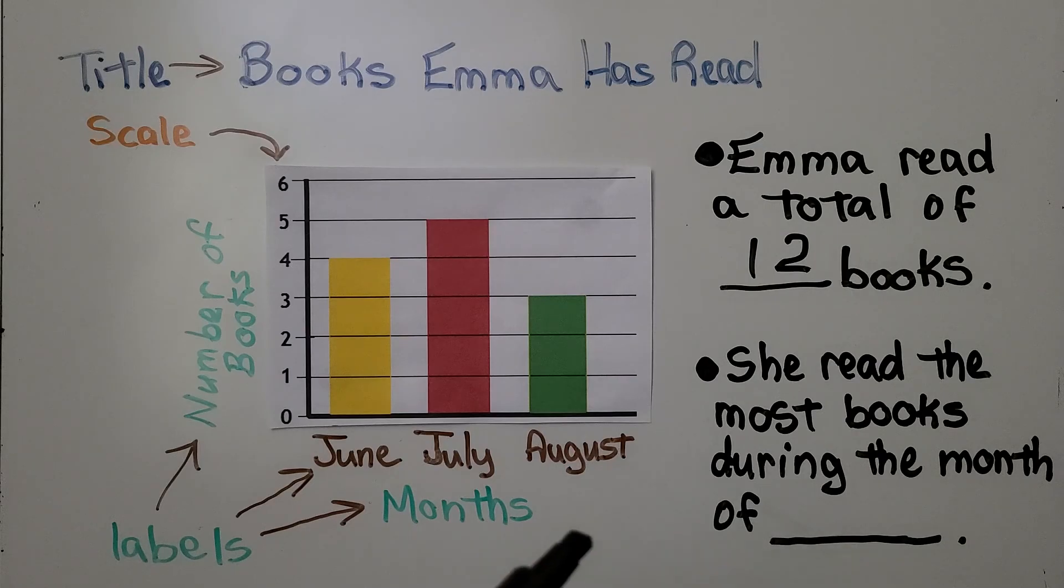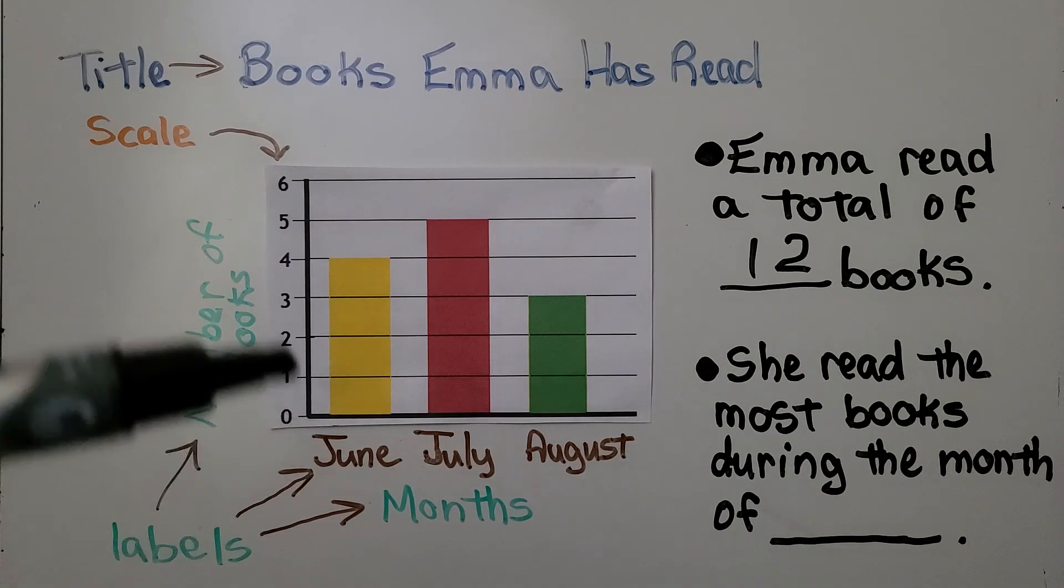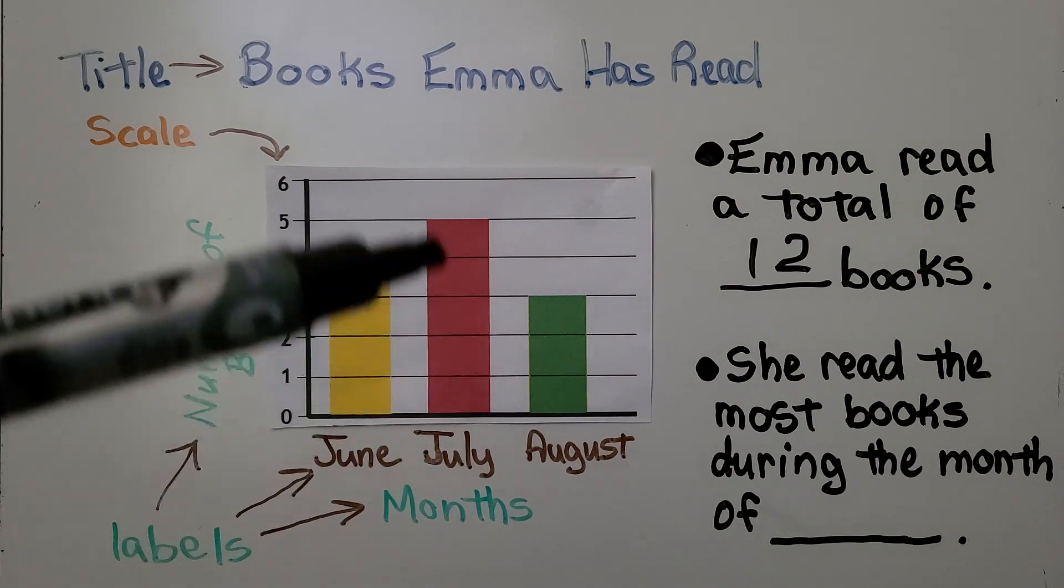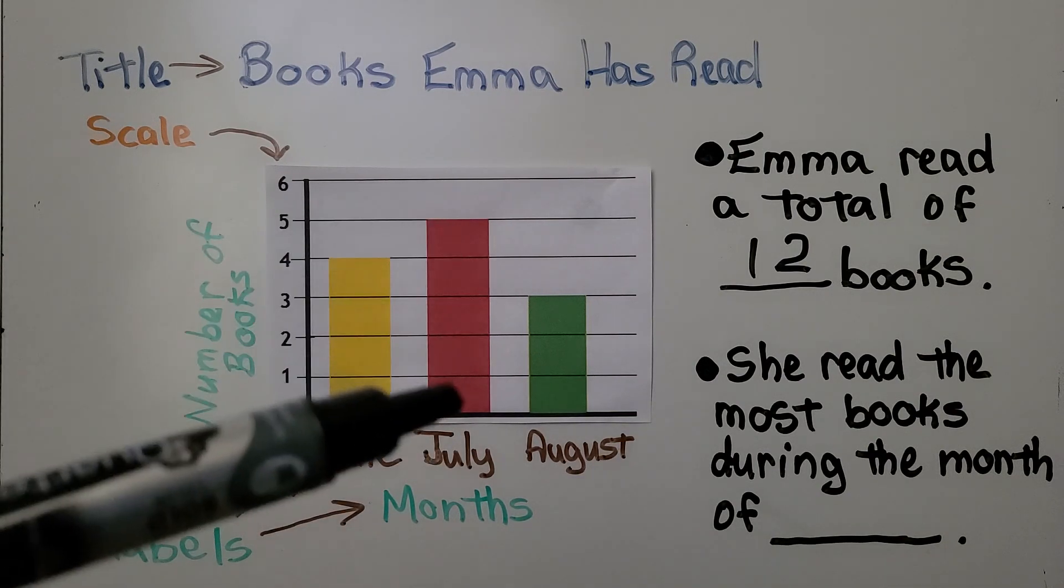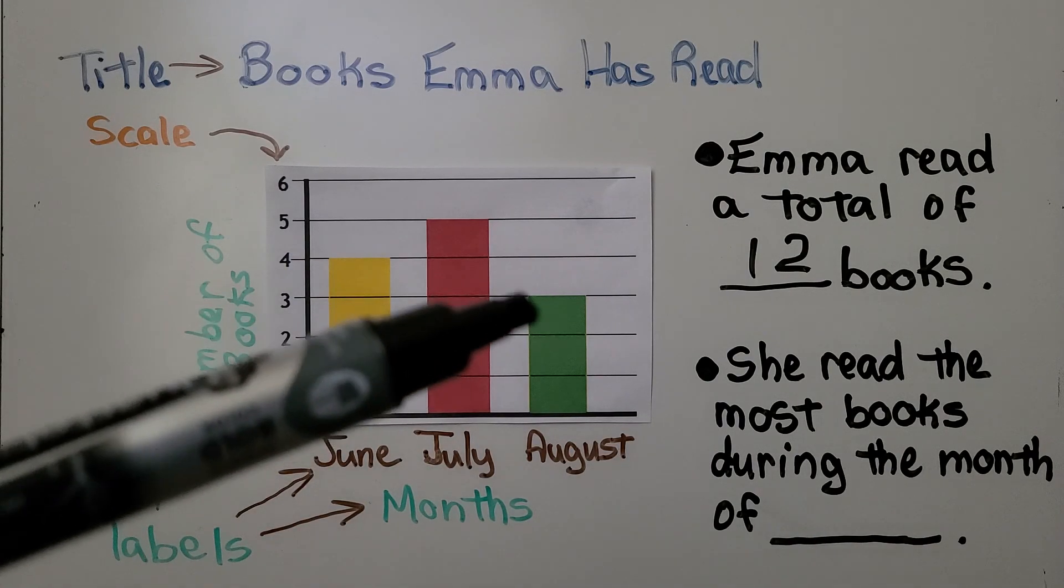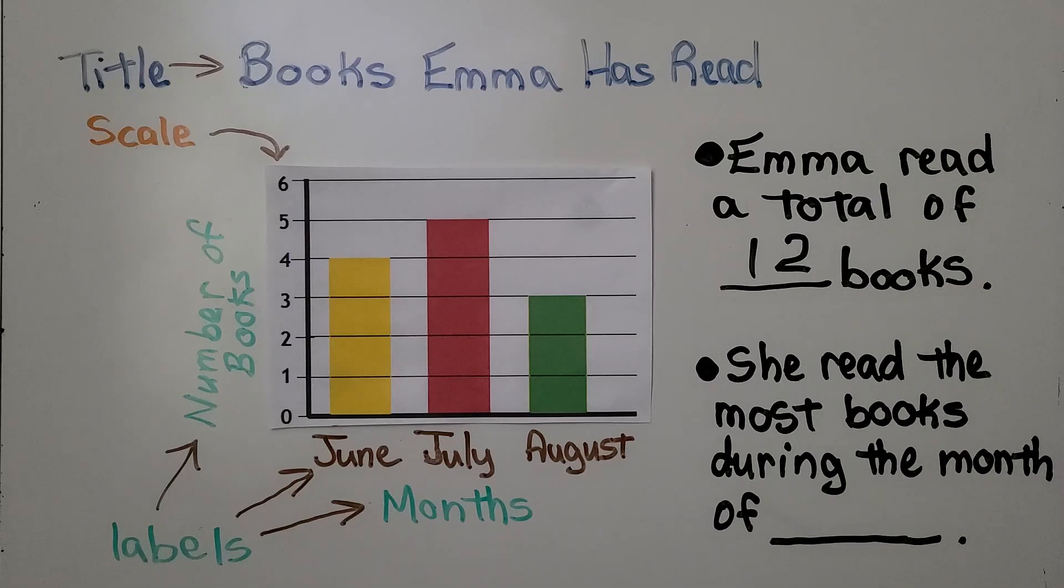This question says she read the most books during the month of blank. We can look at the bar graph for the tallest, the longest bar, and that would be July. That's 5. It's higher than the bar for June or for August. So she read the most books during the month of July.